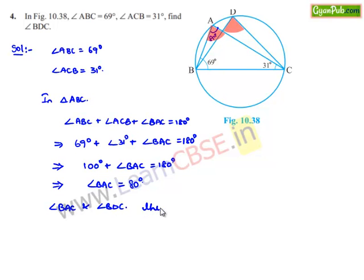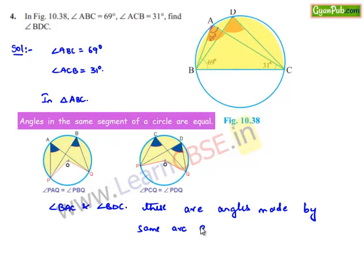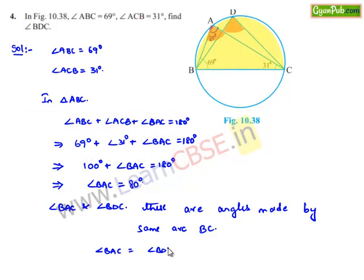Now considering angle BAC and angle BDC, these are angles subtended by the same arc BC. Therefore angles formed by the same arc are equal, so angle BAC equals angle BDC. Since angle BAC is 80 degrees, angle BDC is equal to 80 degrees.